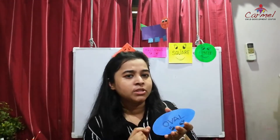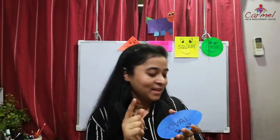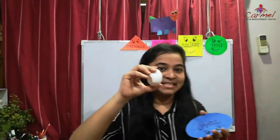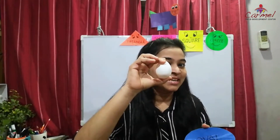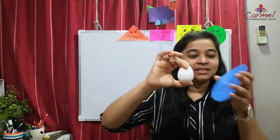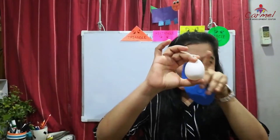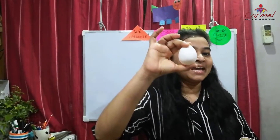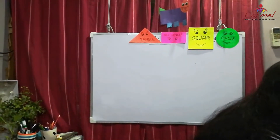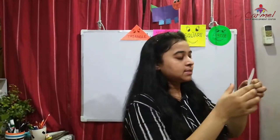It's an oval shape. Have you seen the oval shape at home? The egg looks oval in shape — see the shape of the egg, it is oval. And the watermelon — you have seen a watermelon, isn't it? The shape of the watermelon also looks oval. Let's trace the oval.